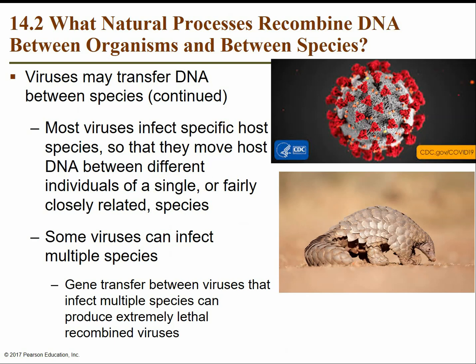Some viruses can infect multiple species, and gene transfer between viruses usually results in extremely lethal recombined viruses with a hybridization of pathogenicity. For example, COVID-19 is thought to have jumped from bats to pangolins — a scaly anteater-like animal — and then to humans. That's the leading theory, though more research has to be done.